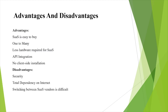The advantages of Software as a Service: SaaS is easy to buy because the SaaS pricing is based on monthly subscriptions. Next is one-to-many — one resource is shared between multiple users, so one software is shared between multiple users. Less hardware is required for SaaS. We can also do API integration on the SaaS platform. No client-side installation is required — SaaS services are accessed directly from the service provider using an internet connection.